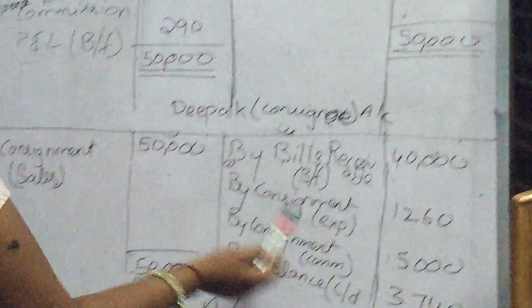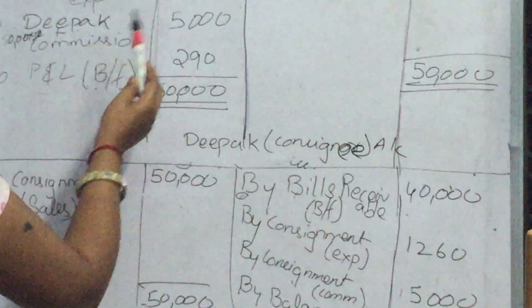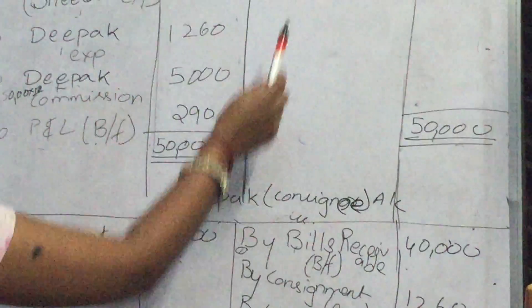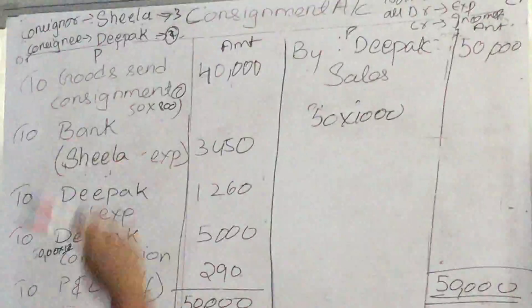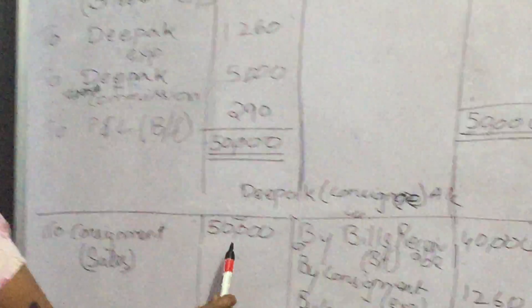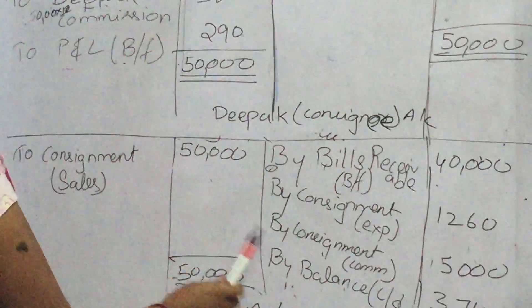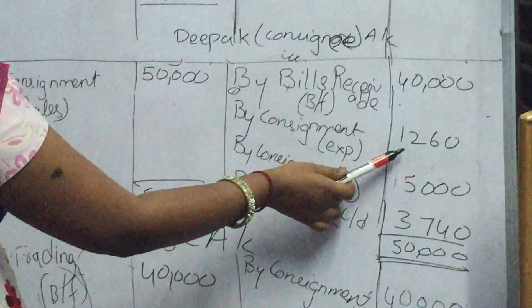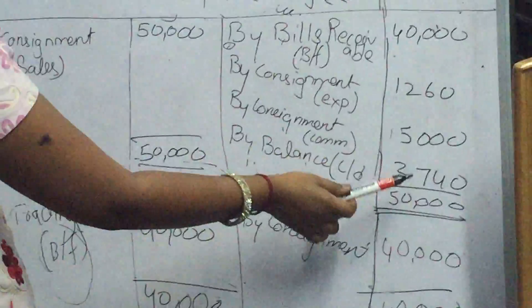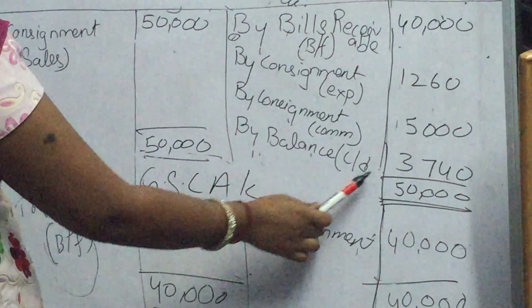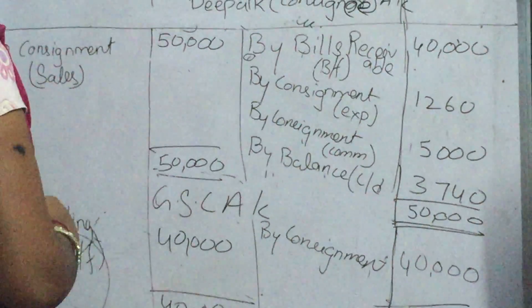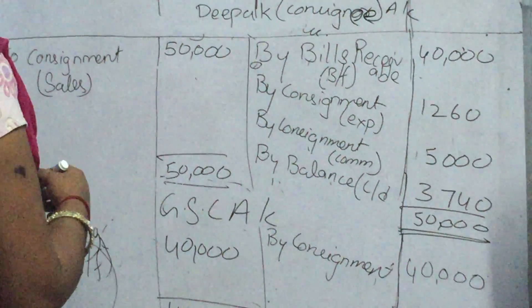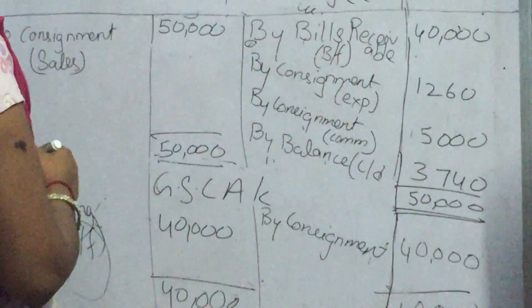Next, Deepak commission — 5,000. Next, Deepak sales is there on the credit side — transfer to debit side from the consignment account — 50,000. Then 50,000 minus 40,000 minus 1,260 minus 5,000 — then you'll get the balancing figure carried down: 3,740. So 3,740 is the balance carried down.